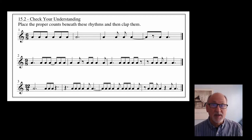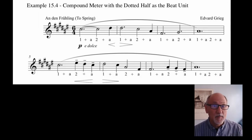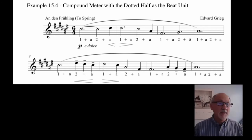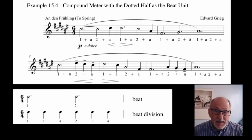All the examples we have seen so far use the dotted quarter to signify the beat unit. But it is also possible to use the dotted half note, or the dotted eighth note, as the beat unit. Here are some examples. This is a piece by Edvard Grieg that uses compound meter with a dotted half as the beat unit. [Music plays] In the 6-4 meter of this example, the dotted half note is the beat unit, and the quarter note is the beat division. The counts have been placed accordingly.